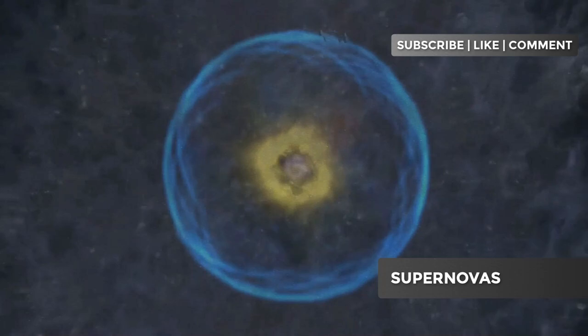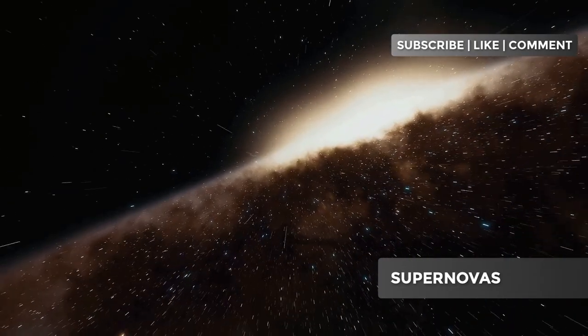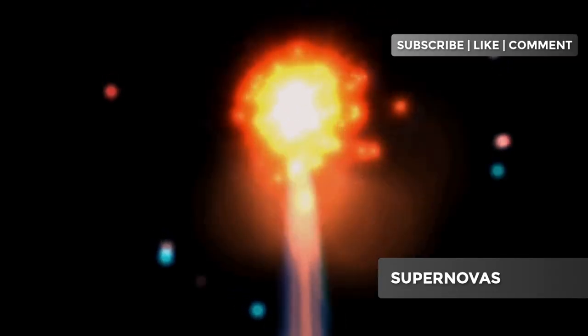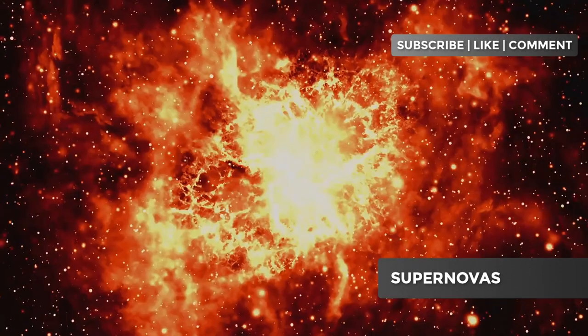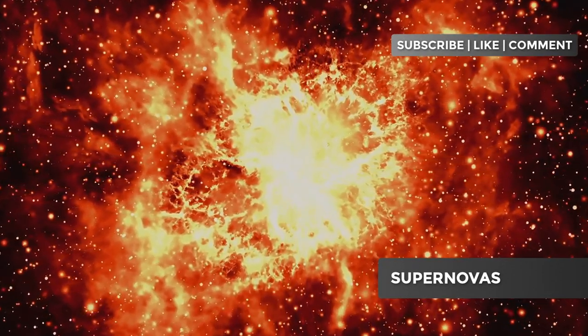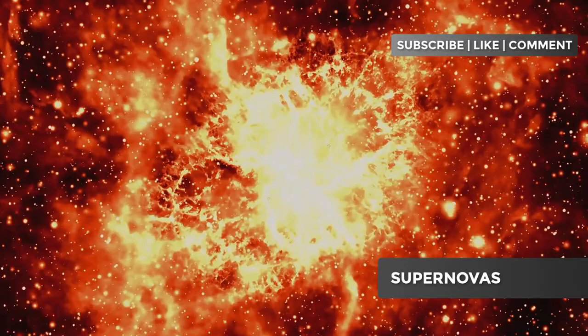Thermonuclear supernovas occur differently. They involve white dwarfs in binary systems. A white dwarf is what remains of a star like our sun after it has exhausted its fuel. If a white dwarf is in a binary system, it can accumulate matter from its companion star.